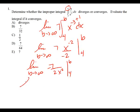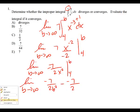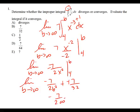Now we're going to substitute in. We've got the limit as B approaches infinity of negative seven over two B squared minus negative seven over two times four squared. Four squared is sixteen, sixteen times two is 32. The double negative becomes positive. When I plug in infinity, negative seven over two B squared goes to zero — small number over big number — so my answer is seven over 32.